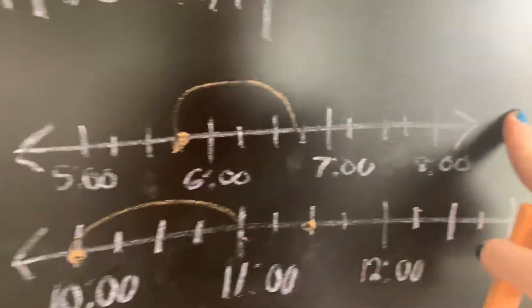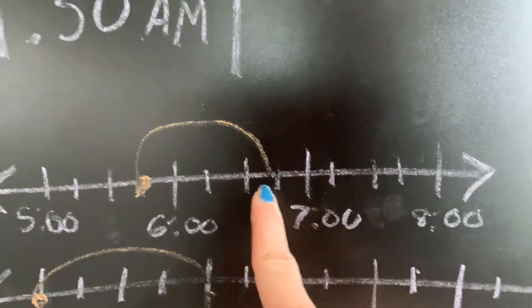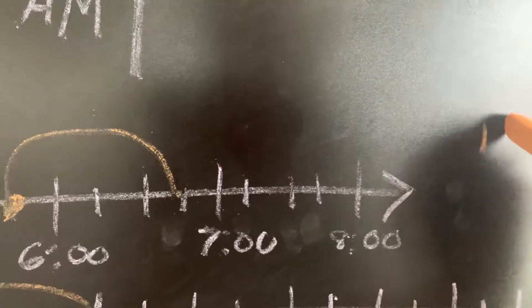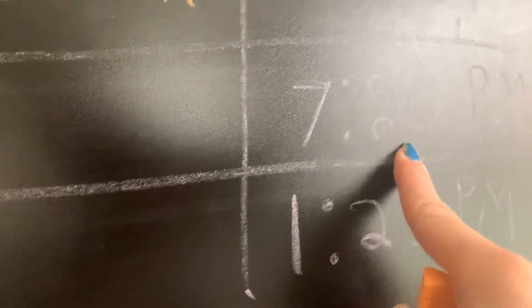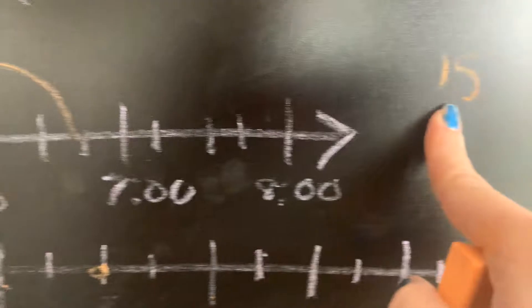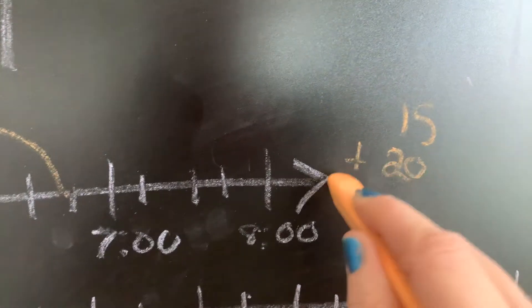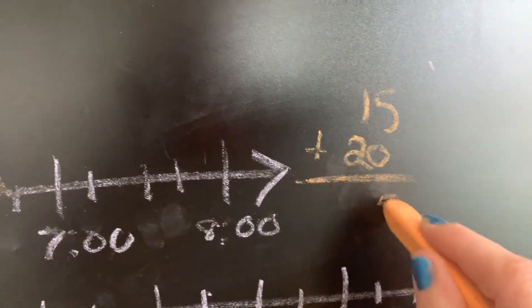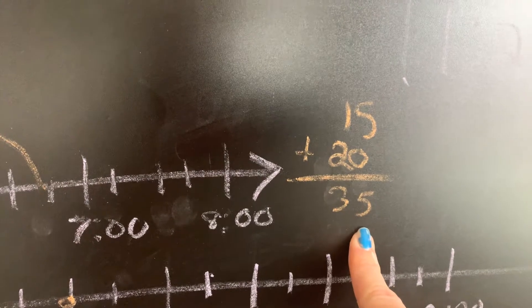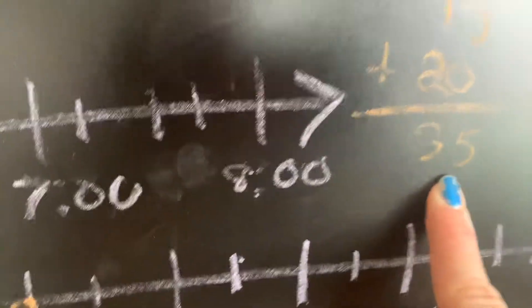So what I'm going to do is I'm actually going to make an addition problem. I know that to get to seven o'clock, I need 15 minutes. And once I get to seven o'clock, I need 20 extra minutes to get to 7:20. So 15 minutes gets me to seven o'clock. 20 minutes gets me to 7:20. I'm going to add them up together. I get 35. So from 5:45 to 7:20, it takes one hour and 35 minutes.